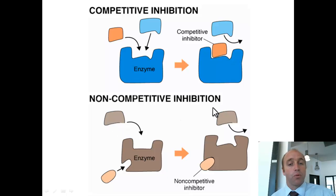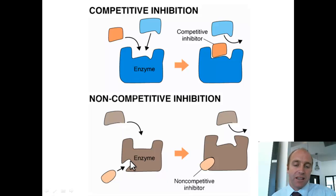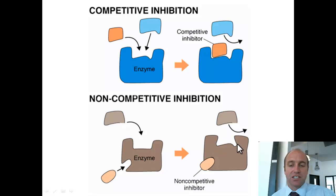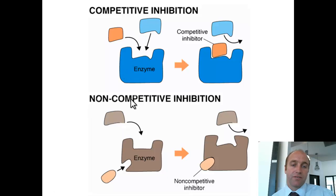Non-competitive inhibitors work in a similar way, but instead of competing for the active site, they work by attaching to another part of the enzyme. In the example shown below, the non-competitive inhibitor attaches to the bottom of the enzyme. Normally the enzyme and the substrate would fit quite nicely, but when the non-competitive inhibitor is attached, it changes the shape of the enzyme and changes the shape of the active site, meaning the substrate can't fit in. So competitive inhibitors fit in the active site, while non-competitive inhibitors attach elsewhere but also prevent the substrate from fitting into the active site.